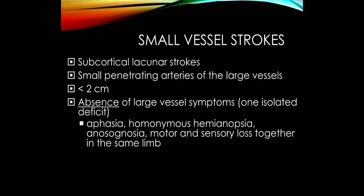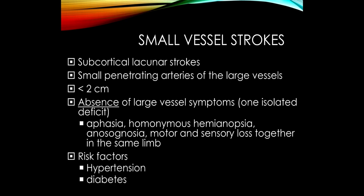They don't have large vessel symptoms, which would be, for example, aphasia that we see with an MCA stroke, or homonymous hemianopsia with an MCA or PCA stroke, or anosognosia with a right MCA stroke. In general, motor and sensory loss together in the same limb, if it's a stroke in the brain, suggests it's more likely to be a large vessel stroke. If we have just a specific focal deficit, that's going to be a lacunar stroke.